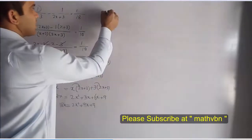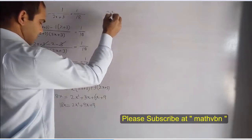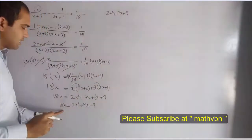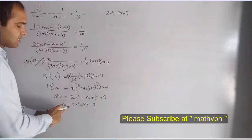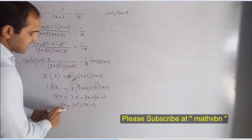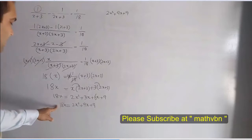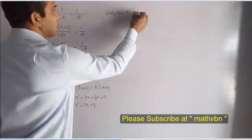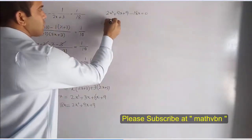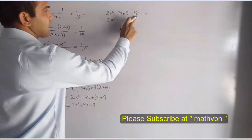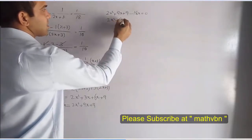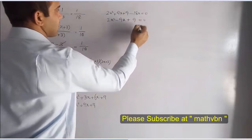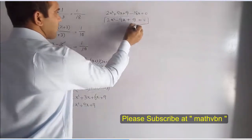Now, further simplifying: 2x² + 9x + 9. Since 18x moves to this side, it becomes negative — or you can subtract 18x from both sides. So 2x² + 9x minus 18x plus 9 equals 0, which gives 2x² minus 9x + 9 equals 0. This is now the quadratic equation.